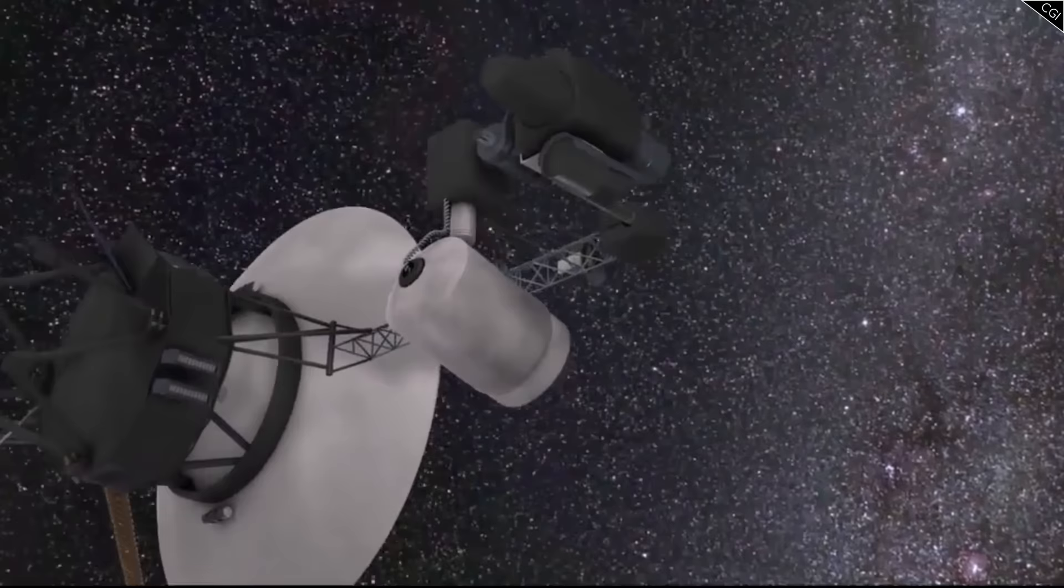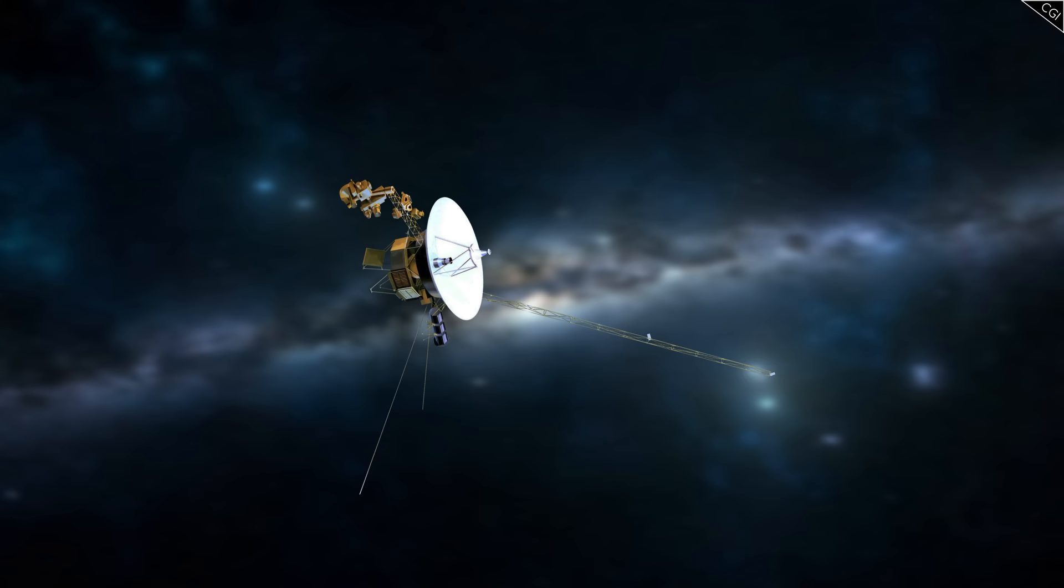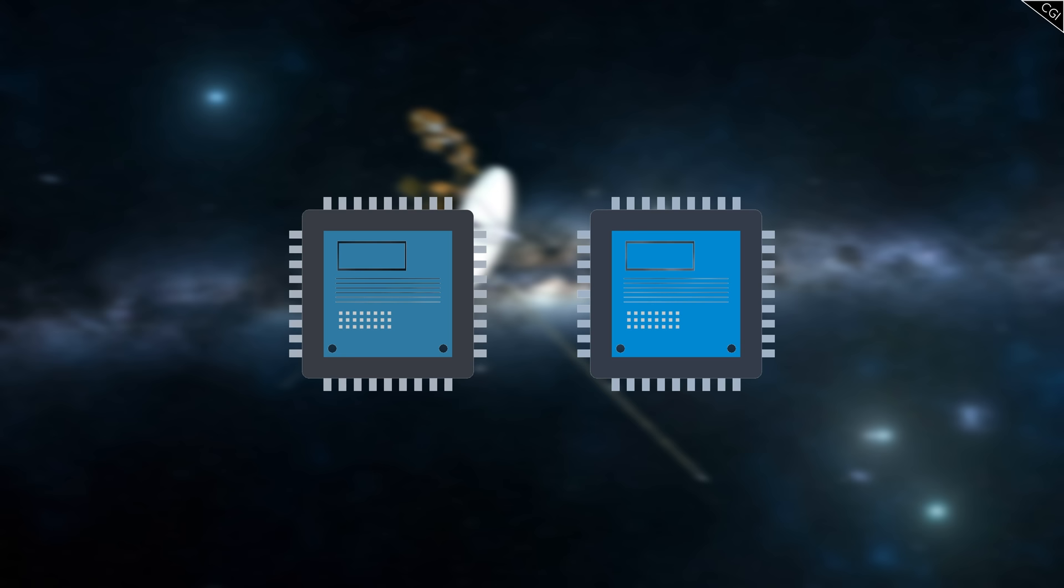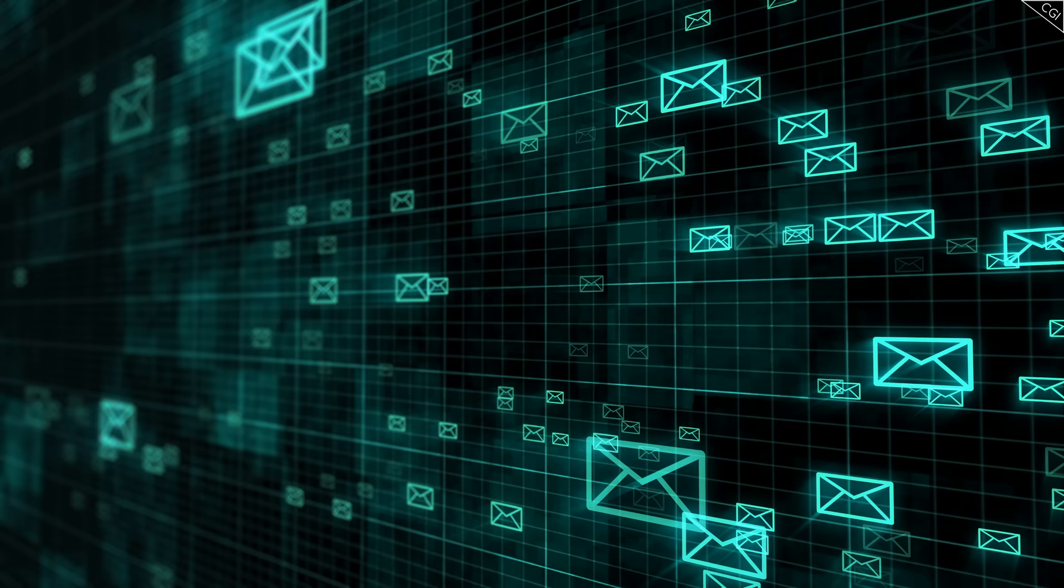They could switch over to a backup system. It would not be the first time they'd started using a new computer on Voyager 1 after the old one stopped working. Voyager 1 is built with redundancies. This isn't even the first AACS computer that's been used. A previous one became defective a while ago.